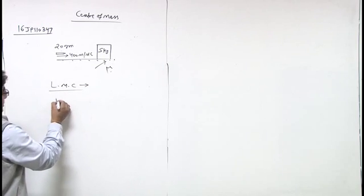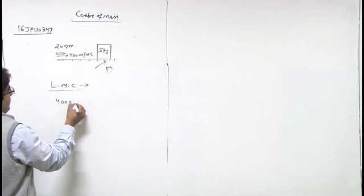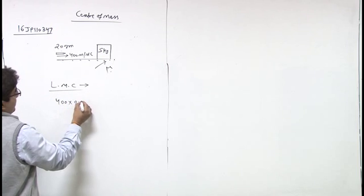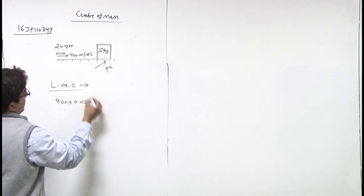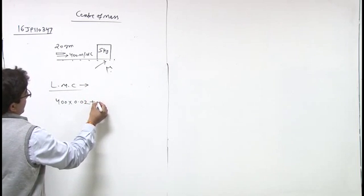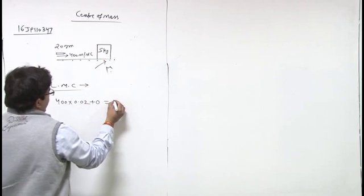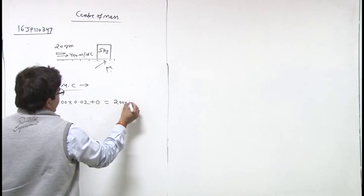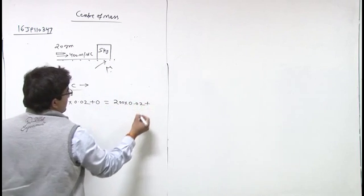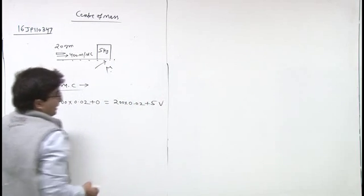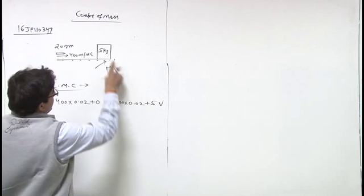initial momentum of bullet is 400 multiplied by mass 20 gram, so 0.02 kg, plus the block at 0 equals to finally 200 multiplied by 0.02 plus 5 into V, velocity of block.